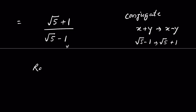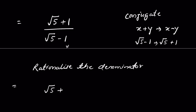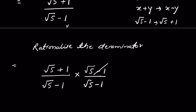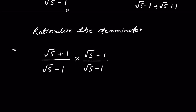Let's rationalize the denominator. We have square root of 5 plus 1 upon square root of 5 minus 1. We multiply and divide by the same number because doing so doesn't change the value — the number divided by itself equals 1, and multiplying by 1 has the same result. That's why we multiply and divide by the same number.